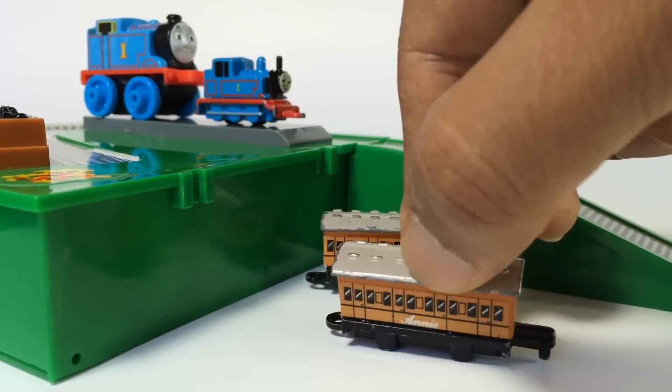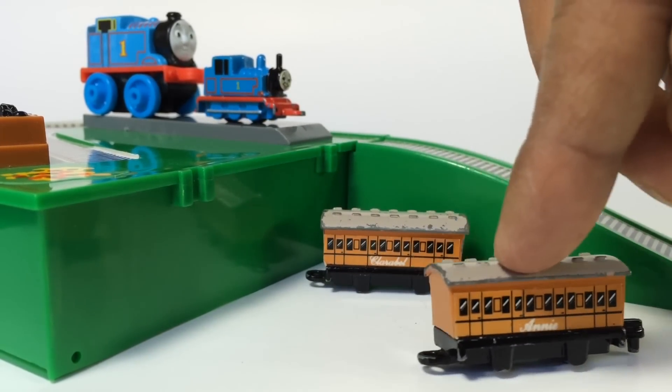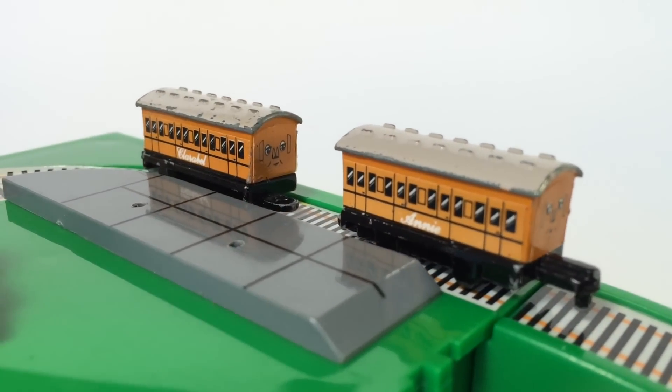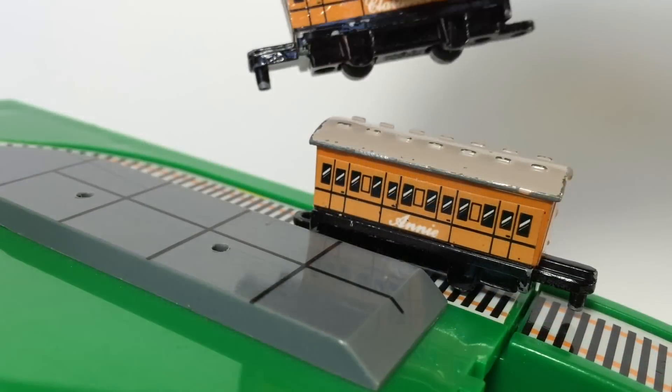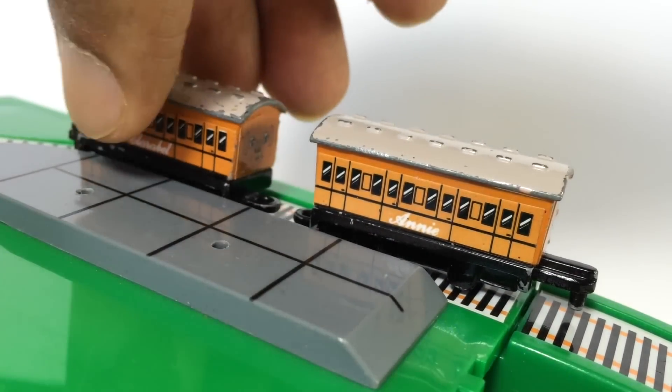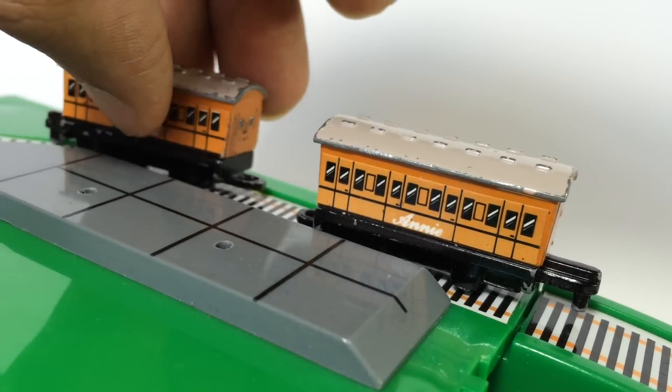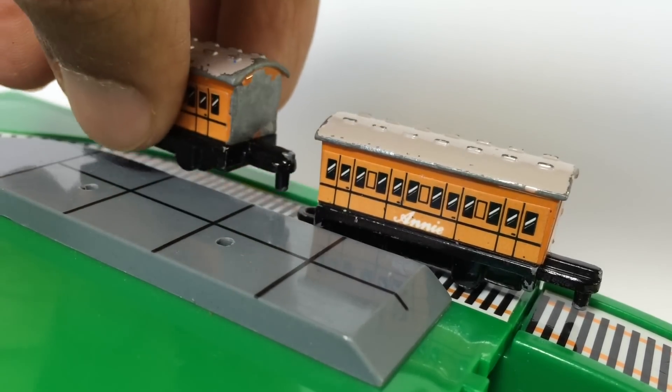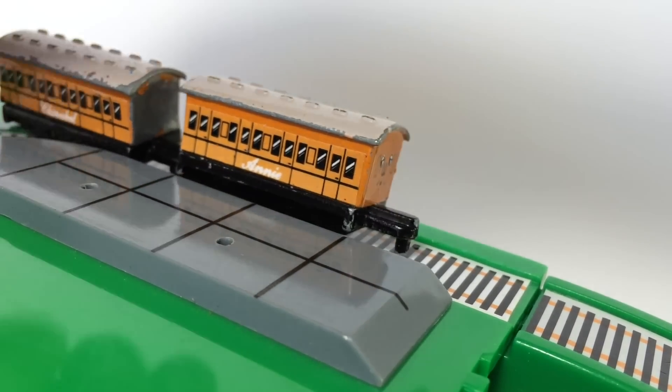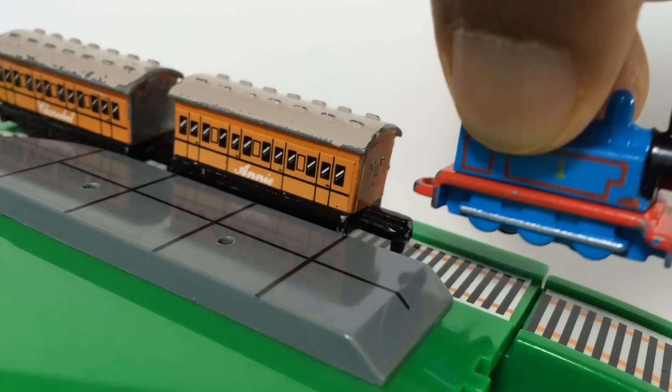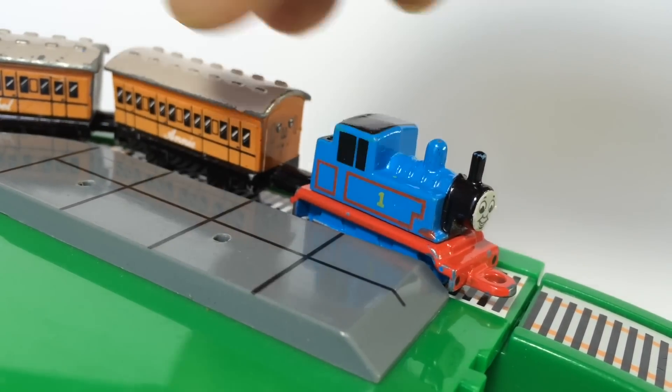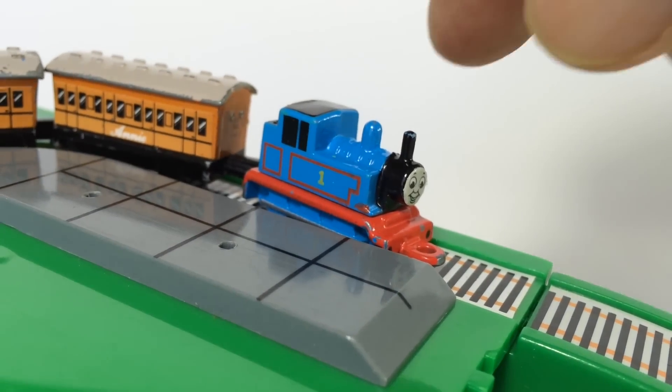Let's go ahead and connect it here. You can see the connector, and look at this. So it's easy to connect, all you need to do is go back and look at this and connect it to Thomas. Here you can see Thomas, so yep it's really fun to play with Thomas, Annie and Clarabel.